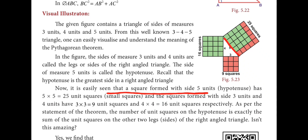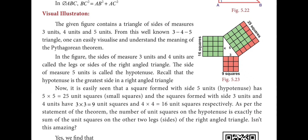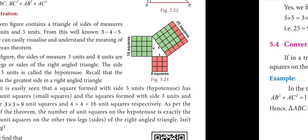The squares formed with sides three units and four units: three times three is nine, and four times four is 16. When we add both we get 25. So nine plus sixteen equals twenty-five. By seeing this we can easily say that in Pythagoras theorem BC² = AB² + AC².